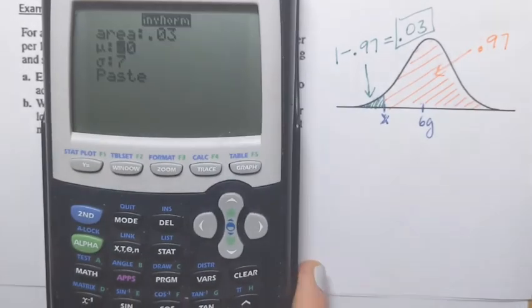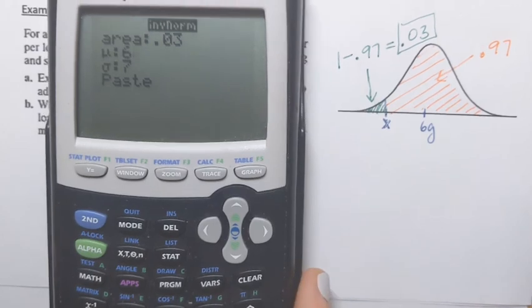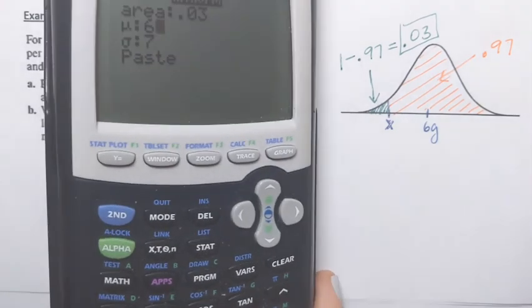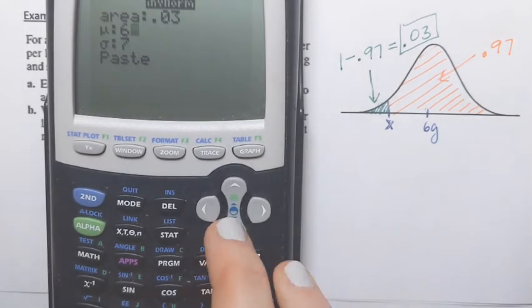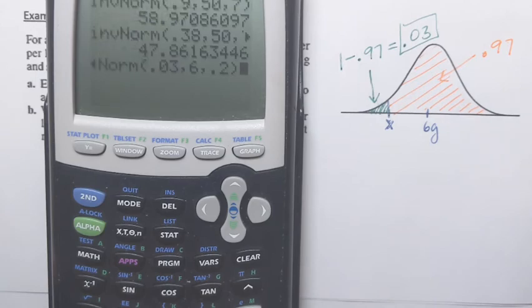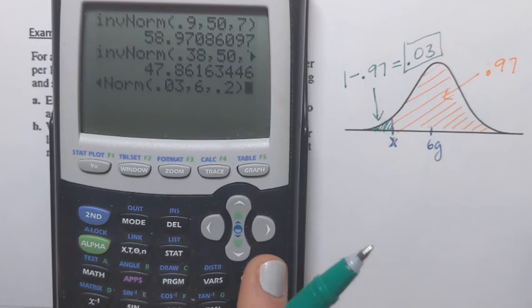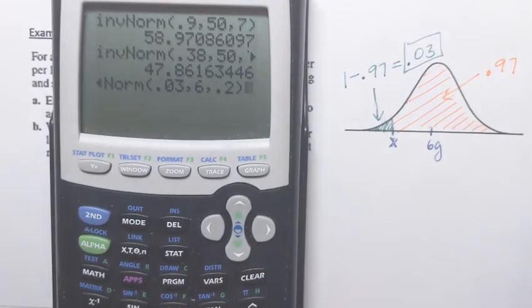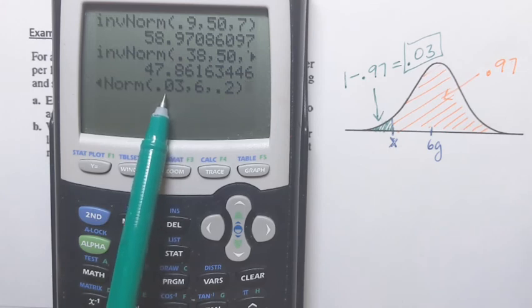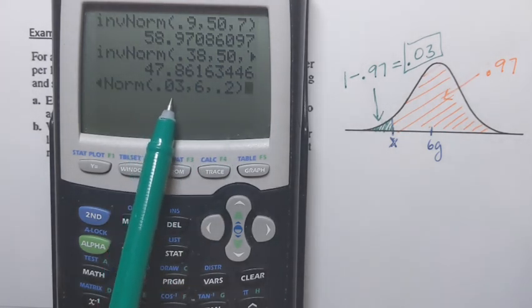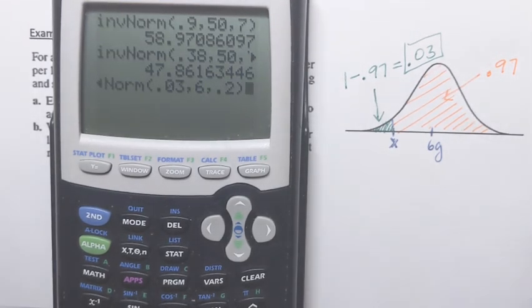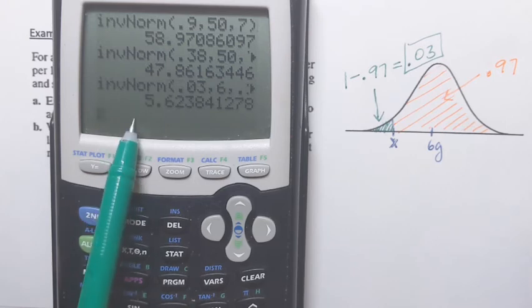Now, mean is 6, 0.06 and then standard deviation 0.2. So now we'll press enter. If your calculator did not give you that list to enter, then you would have to enter those three numbers in order, separated by commas. 0.03, 0.06, 0.02. Now I'm pressing enter, and I'm getting this number. So 5.6.